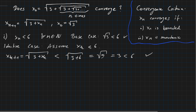And 3 is also smaller than 6, so the inductive case is done. We proved that if x_k < 6, then x_{k+1} < 6 as well. This proves that x_n is always smaller than 6 — meaning it is bounded above by 6.